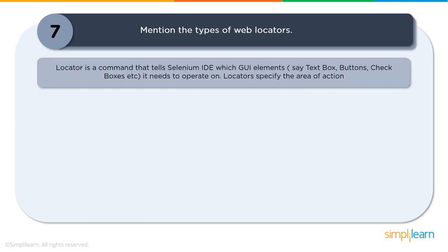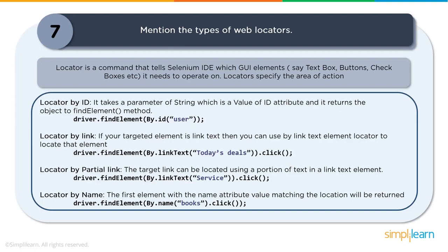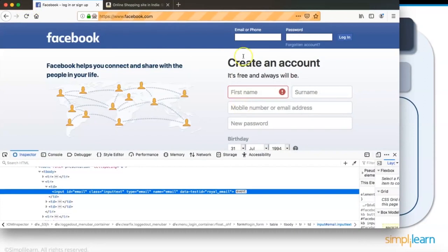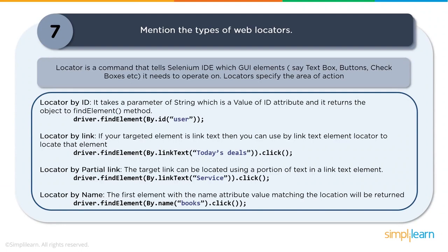Question seven: What are the types of web locators? A locator is a command that tells Selenium which UI element to operate on. Selenium uses locators to find and match elements on your web page. There are eight locating techniques. The first is by ID — the most common way, since IDs are supposed to be unique for each element. For example, on Facebook, the email field has a unique ID value of 'email'.